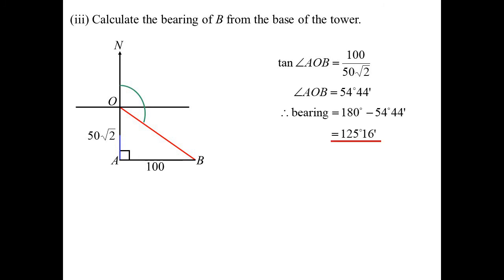Calculate the bearing of B from the base of the tower. There's the base. They said from the base, so I put the compass at O. We want the bearing of B. So angle NOB is what we're looking for. We've just found that OA is 50 root 2. We know that AB is 100. But that's the angle that I want. Well, I'll actually find AOB, which is inside the triangle. So I can use the triangle now. And then once we've got that, take it away from 180, we've got our bearing. Tan of AOB, 100 over 50 root 2, 54 degrees 44. So the bearing, 180 minus that, 125 degrees 16 as our answer.